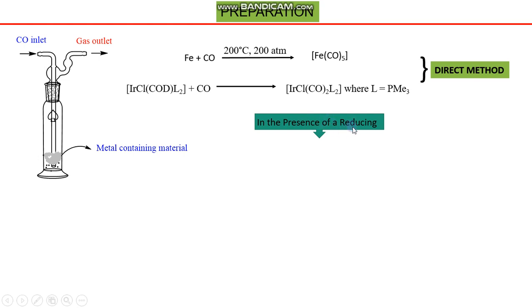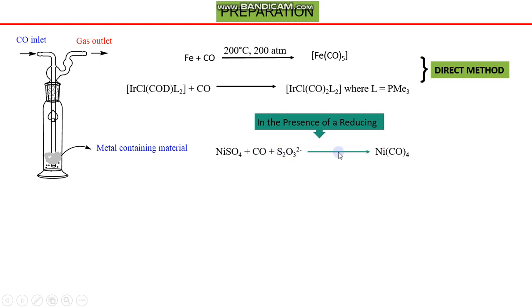The next method involves the use of a reducing agent. This method needs a few more reactants compared to the direct method. In the presence of a reducing agent, at least three species are needed, one of which is the reducing agent. For example, nickel sulfate reacts with carbon monoxide — the reducing agent used is thiosulfate — and tetracarbonyl nickel(0) is obtained.